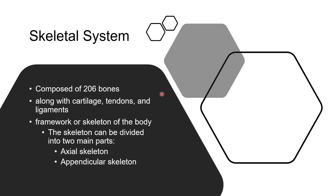The skeletal system is composed of 206 bones, as well as cartilage, tendons, and ligaments. It forms the framework or skeleton of the body, providing support and structure for all the other tissues and organs. The skeletal system also has several other functions, including protecting vital organs, producing blood cells, and storing minerals such as calcium and phosphorus.